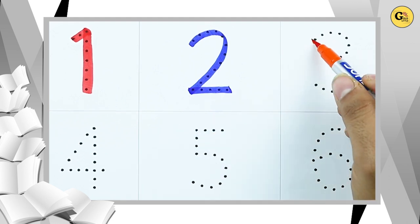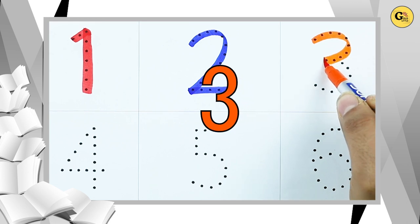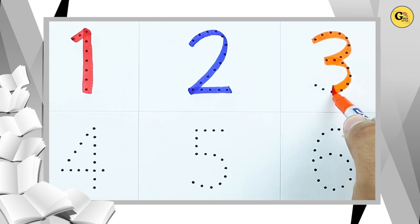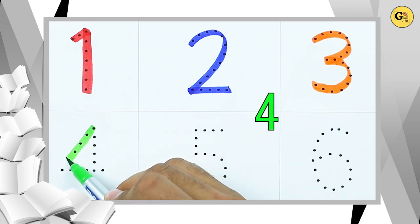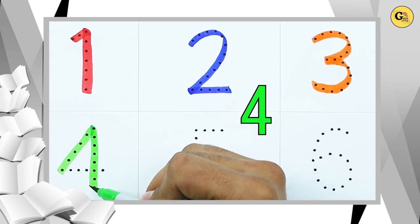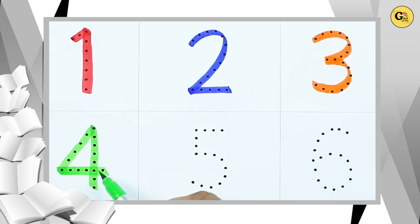It's number 3. Yes, 3 is with orange color. It's number 4 with green color.